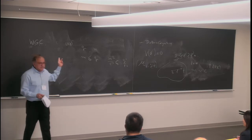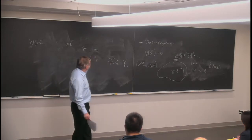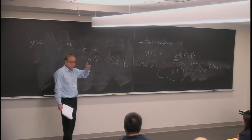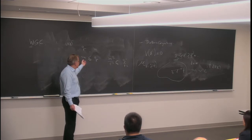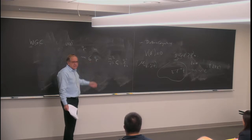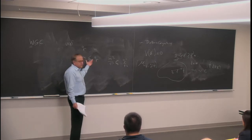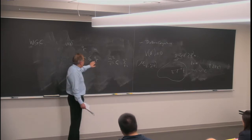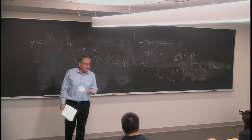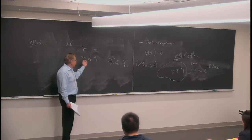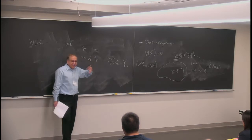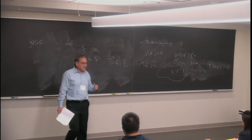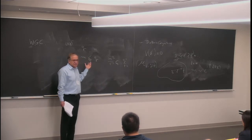The equality M = Q corresponds to BPS states — familiar in string theory from special calibrated geometries or submanifolds preserving supersymmetry. Otherwise, strictly M < Q. There are no proofs, only examples. An interesting example would be the K3 case, where the charge Q corresponds to a homology class in H*(K3), and the question is whether the area of the corresponding object is less than some quantity captured by the charge — a strict inequality that should hold.